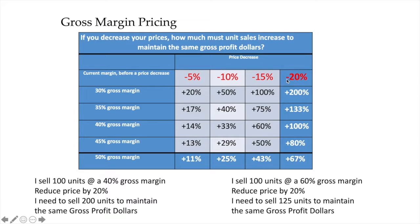A 20% reduction in price at a 40% gross margin — I have to double my sales to maintain the same profitability. If I sell 100 units at 40% gross margin and reduce price by 20%, I must sell 200 units to maintain the same gross margin dollars. But at a 60% gross margin, I reduce price by 20% and only need to sell 125 units — just 25 more units to gain the same profitability.